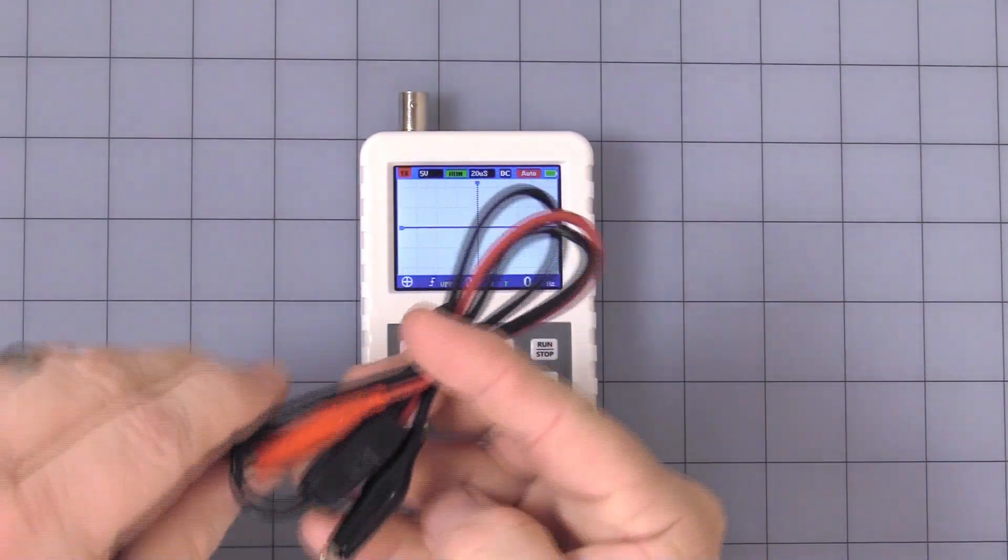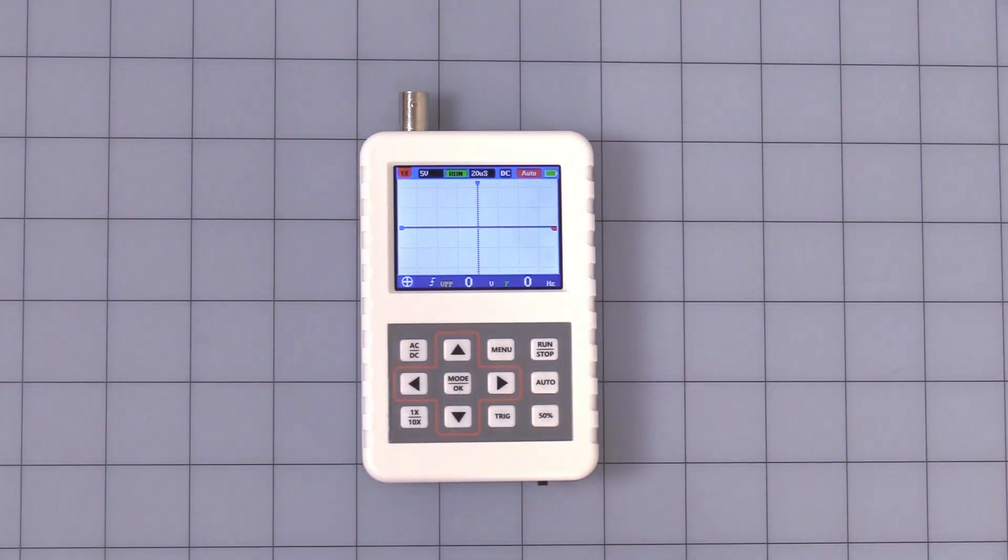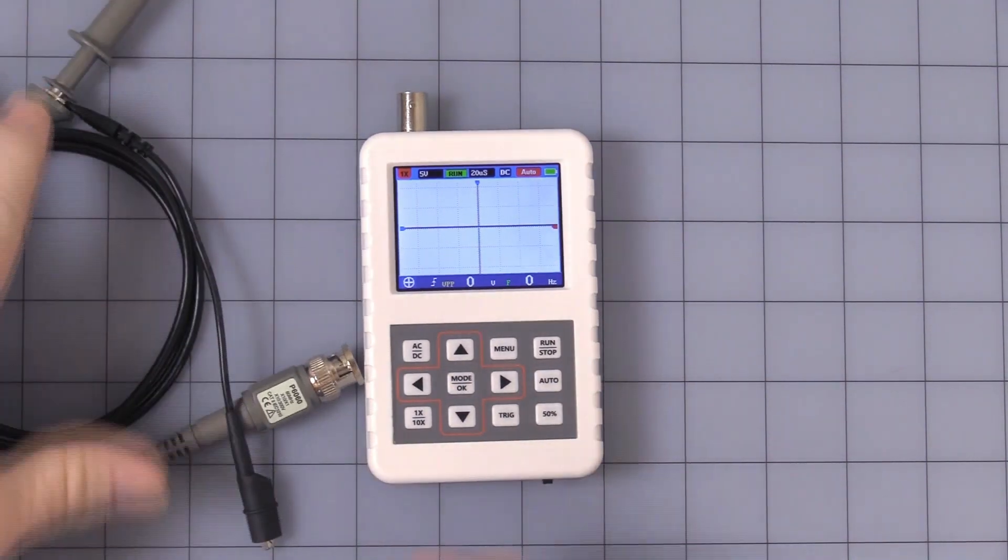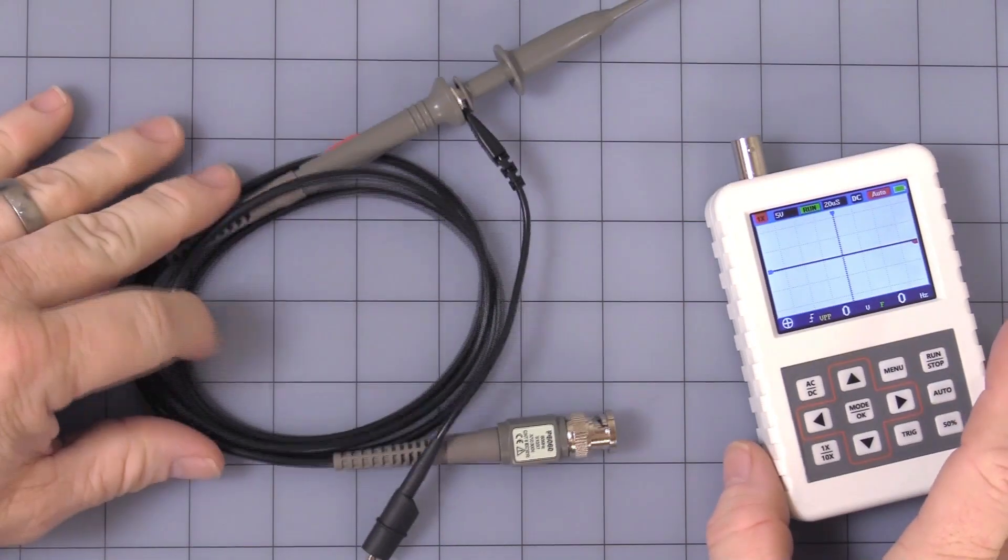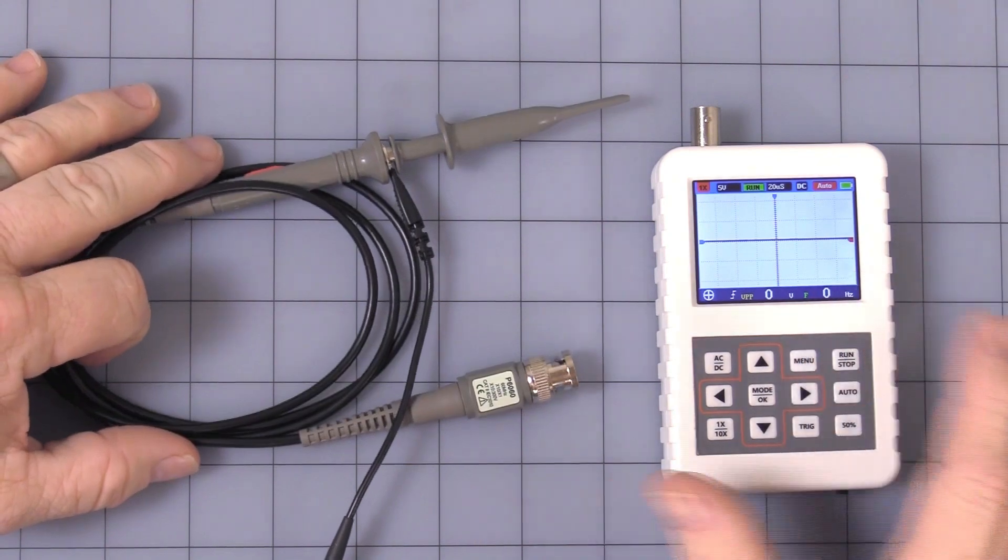It comes with also a single 1X alligator clipped BNC probes in the case. We went out and found some nice little 10X scope probes that we are including with the scope.